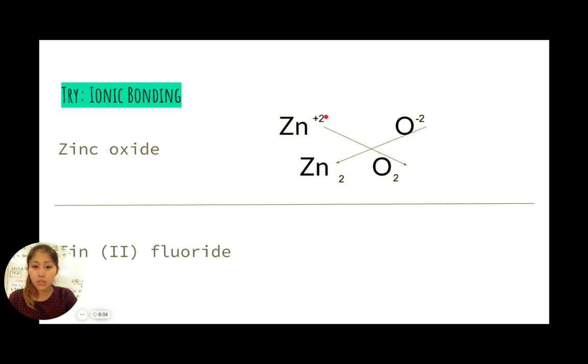We then do our crisscrossing, and we get Zn₂O₂. We can simplify the twos by dividing them both by two, and then we end up with zinc 1 and oxygen 1. Zinc 1 and oxygen 1 means that you have one zinc bonded to one oxygen.